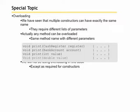It's the same thing as overloading methods. You can create a method that has the same name as any other method but differs in the parameter list. In this example, we have a print method that takes a CashRegister object as a parameter.